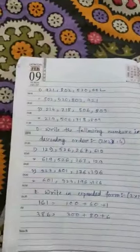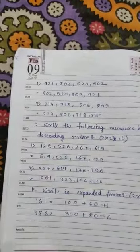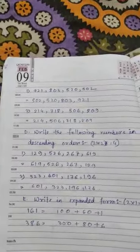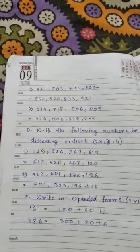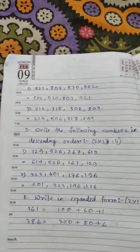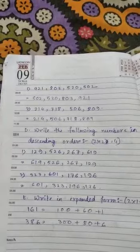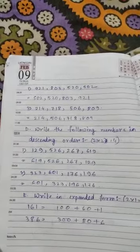Arrange the following number in ascending order: 921, 803, 520, 502. The answer is 502, 520, 803, 921.